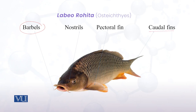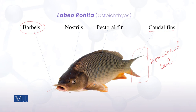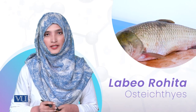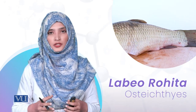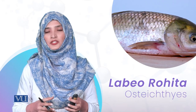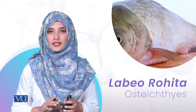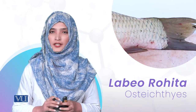Caudal fin کے بارے میں: fishes میں دو طرح کی tails ہوتی ہیں - homocercal tail اور heterocercal tail۔ Labeo rohita میں homocercal tail exist کرتی ہے، یعنی caudal fins equally bilobed ہوتے ہیں۔ Labeo rohita کو commonly Rohu یا Common Carp کہا جاتا ہے، Pakistan اور Indian oceans میں پائی جاتی ہے، paired fins اور jaws موجود ہیں، cycloid scales سے body covered ہے، اور homocercal tail ہوتی ہے۔